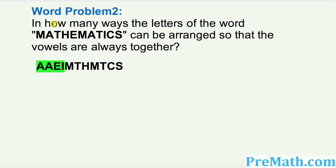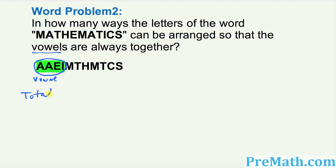Now let's move on to word problem number 2: In how many ways can the letters of the word MATHEMATICS be arranged so that the vowels are always together? So you have to be careful here. I have already put the vowels together as one group — I'll call it the vowel group. And the consonants are put separately. So first, we want to put down how many total groups there are. This vowel group is just one group, not four.